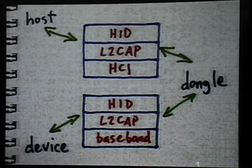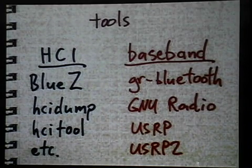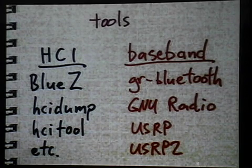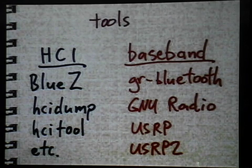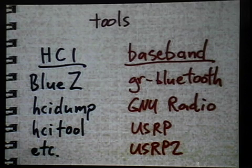That runs over HCI — the Host Controller Interface — between a host and a host adapter like a dongle. And that same HID report carried in the same L2CAP frame is carried over the baseband, the air interface between a dongle and a device. So if we want to explore these systems, we have two different avenues: one is the HCI layer and the other is the baseband layer. The tools I'm going to be talking about today fit into two categories: HCI layer tools based on the BlueZ Linux Bluetooth stack, and baseband tools using the gr-bluetooth project with GNU Radio and the USRP from Ettus Research.